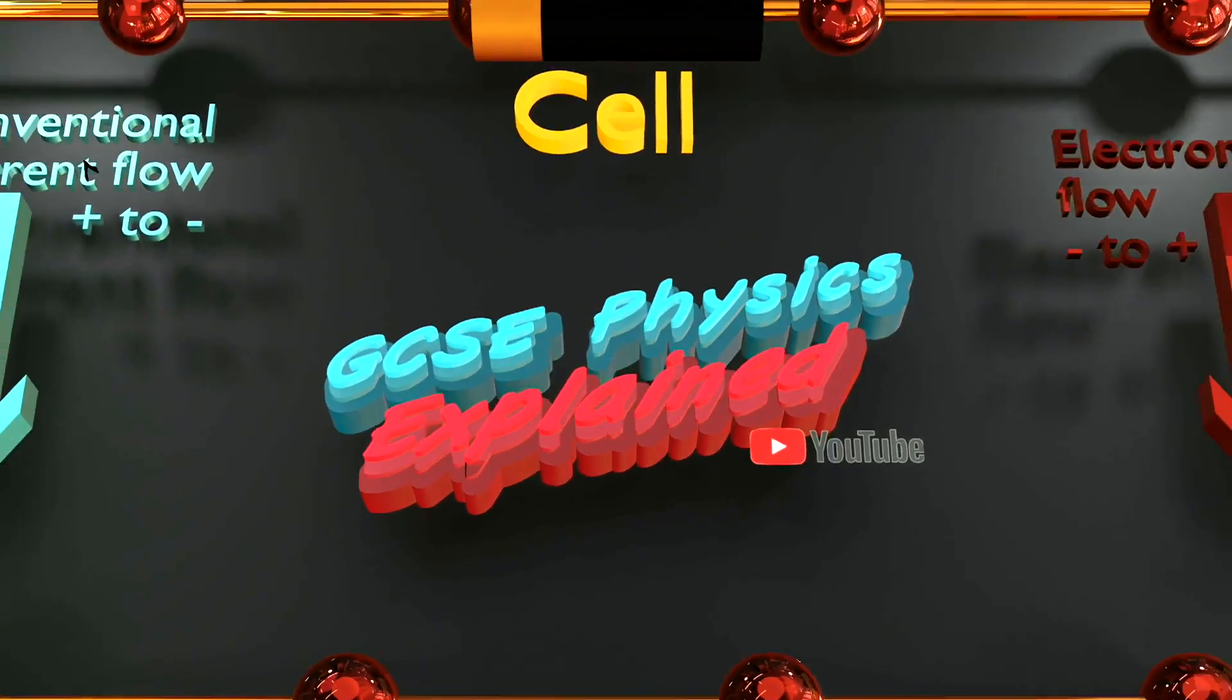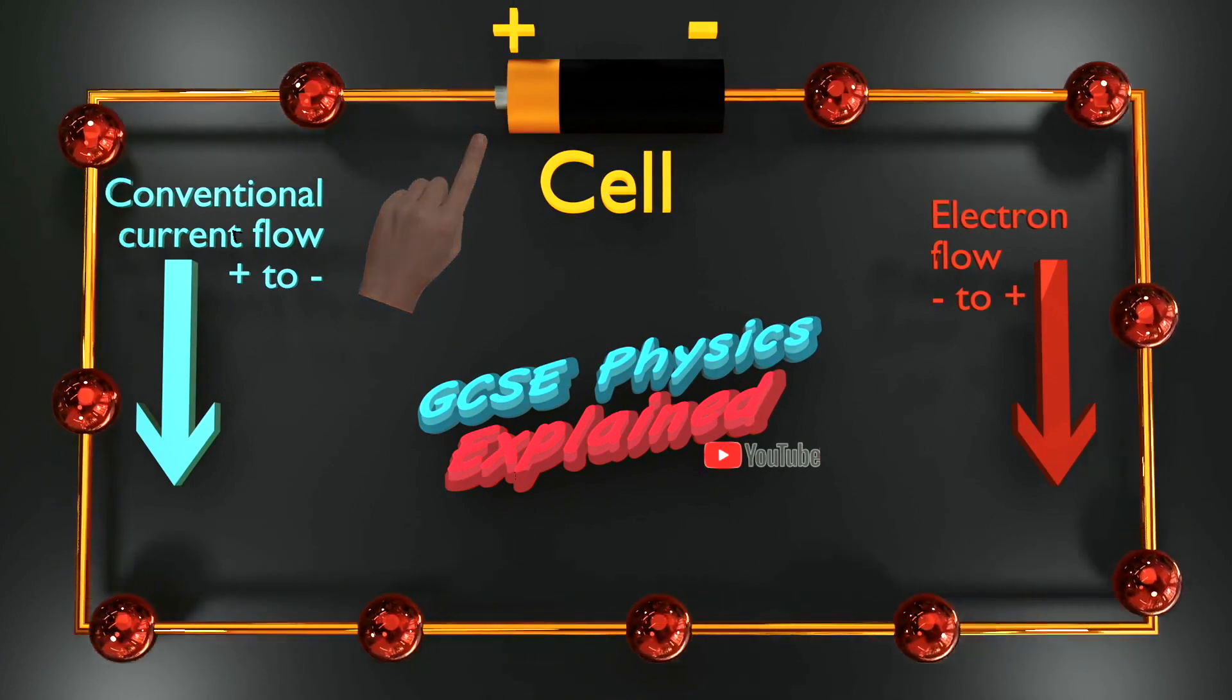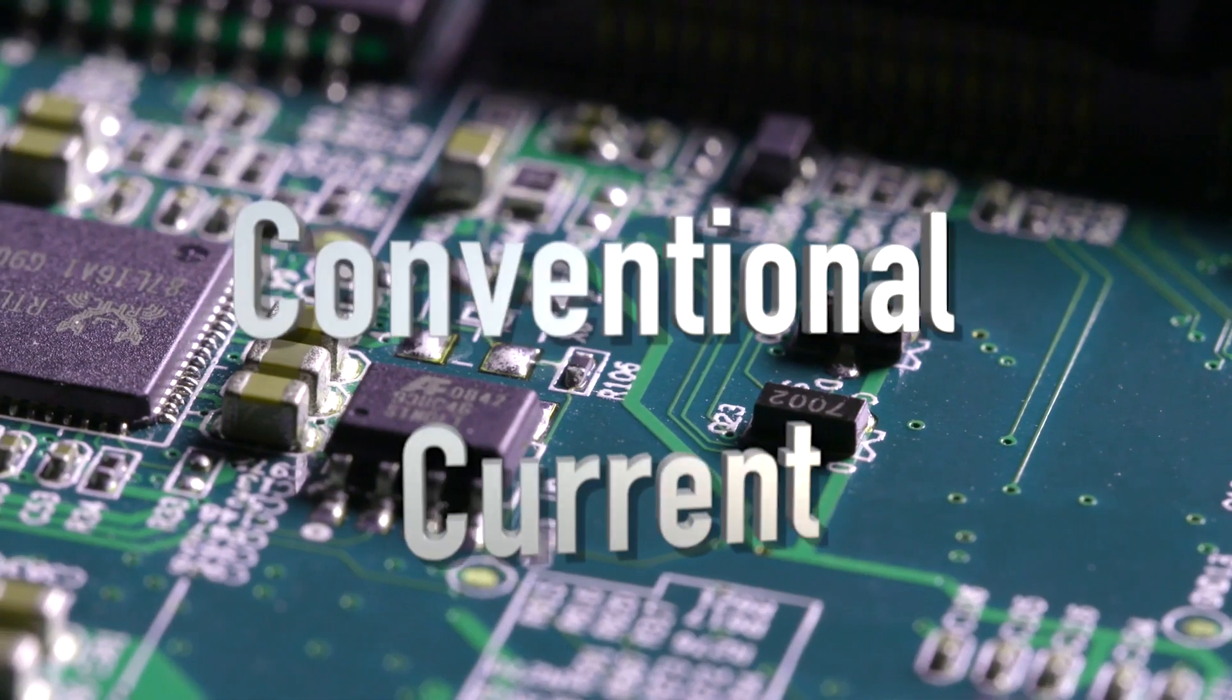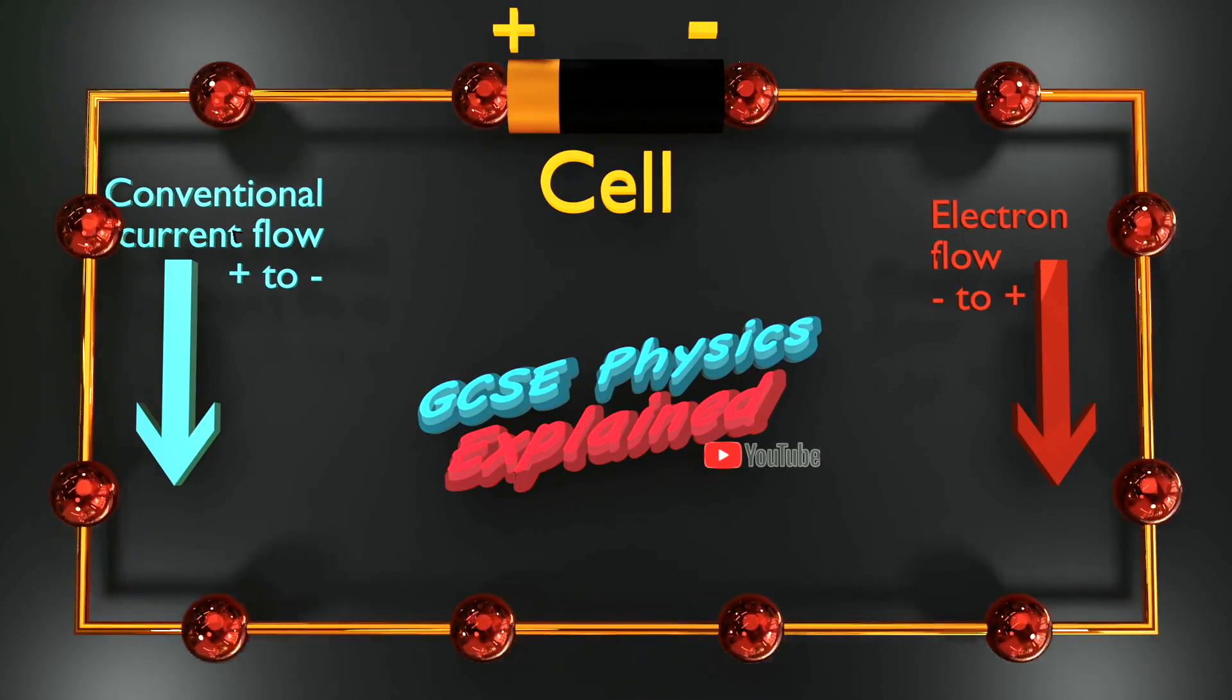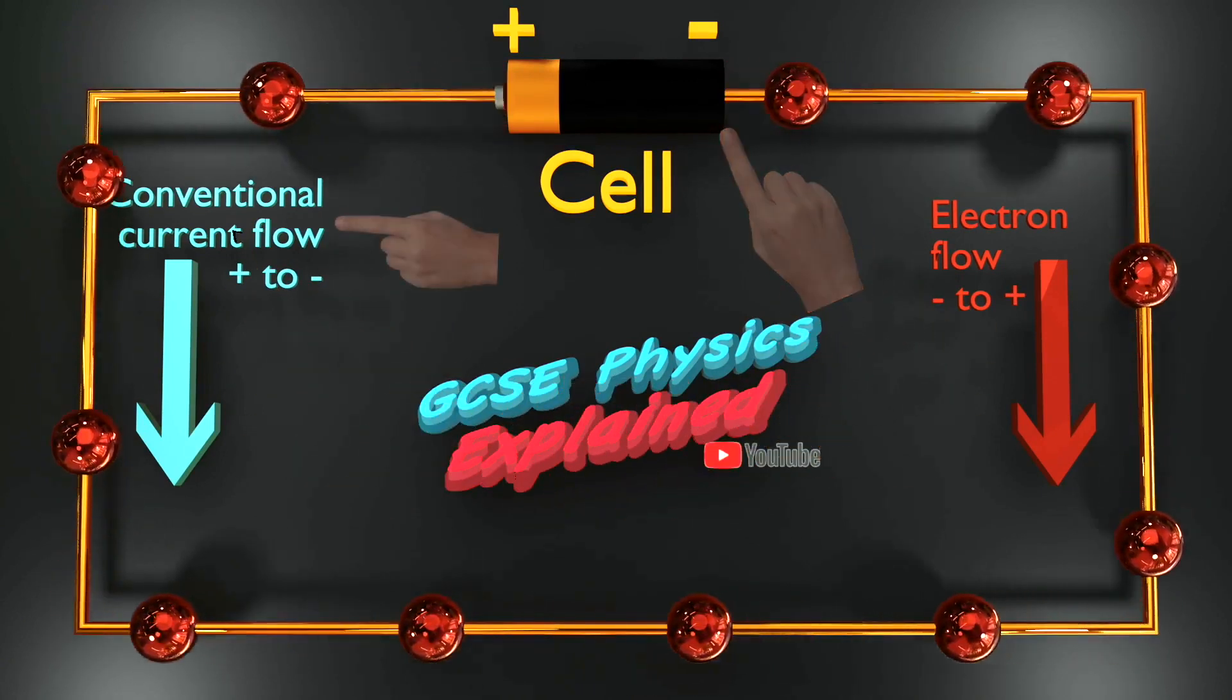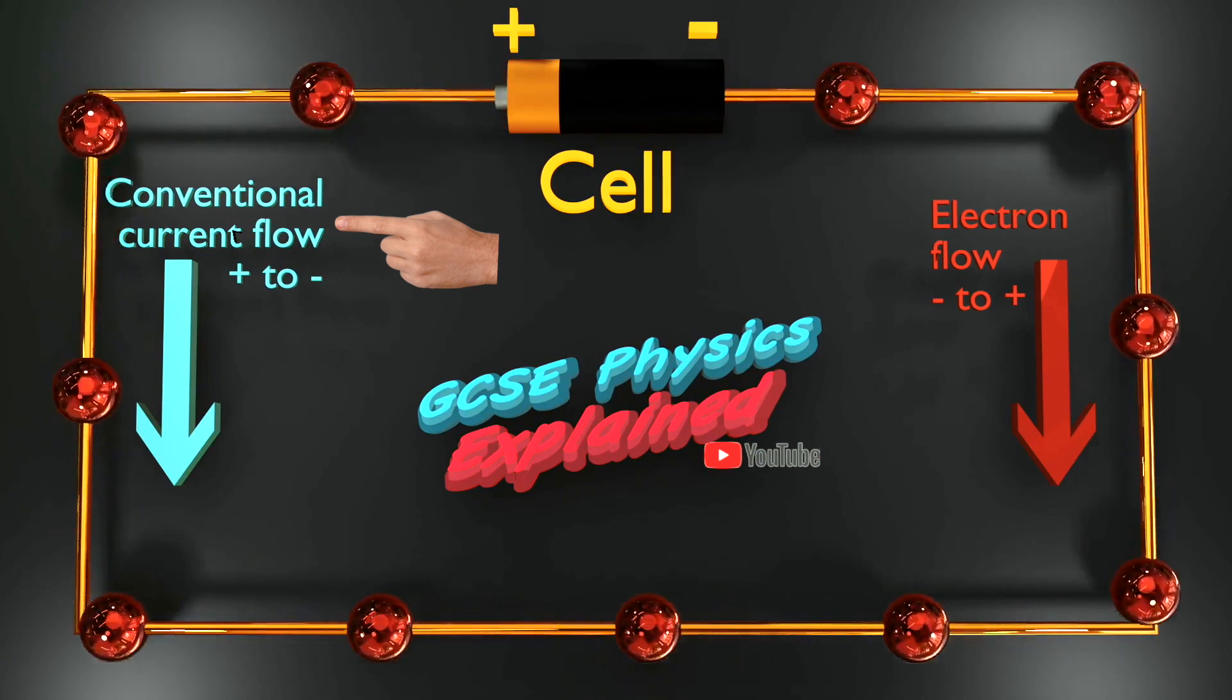If you put a voltage across a piece of metal, the negative free electrons will flow toward the positive terminal. This is current electricity. Electrical circuits will often show the current flowing from the positive terminal of the battery to the negative terminal. This is called conventional current and was first thought of by Benjamin Franklin before the discovery of the electron.